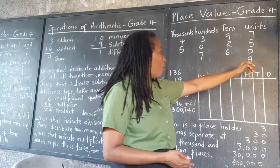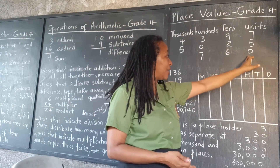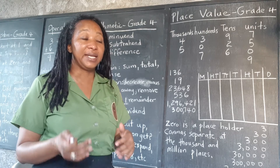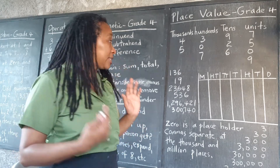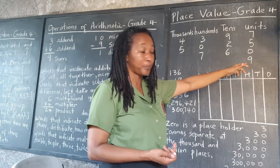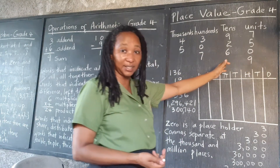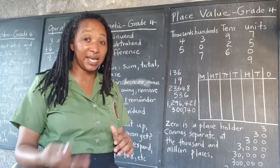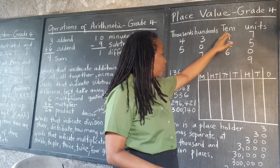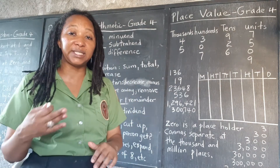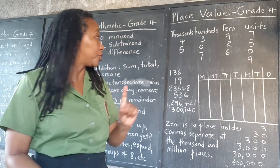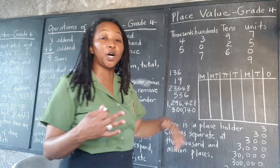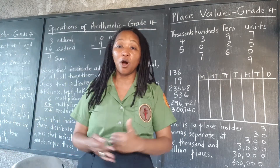Once you get one more in that place, it goes over into the next place. So if we get one more on the nine, we can't write ten units. Our number system — the decimal or base-ten system — means nine is the highest single digit that can hold in a place. Even if you had nine tens and got one more, that would be ten tens, and you would have to realize that ten tens make one hundred and put it in the hundreds place.